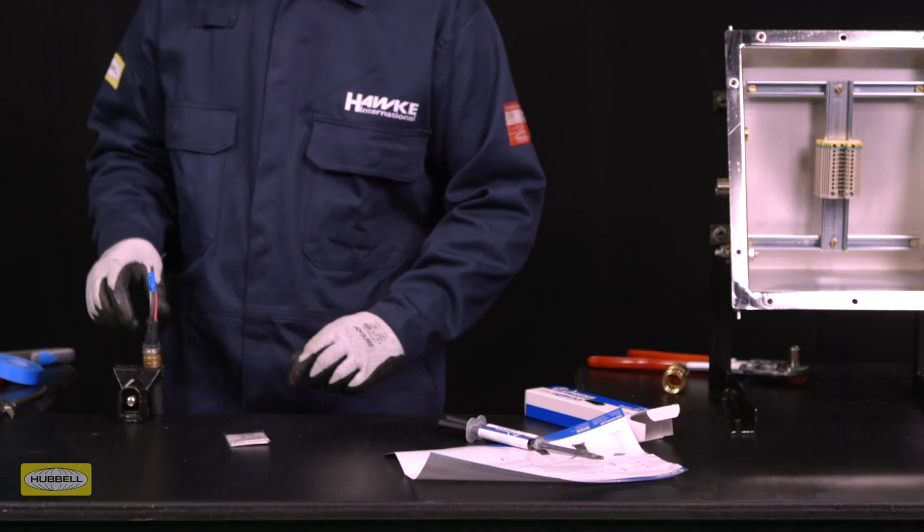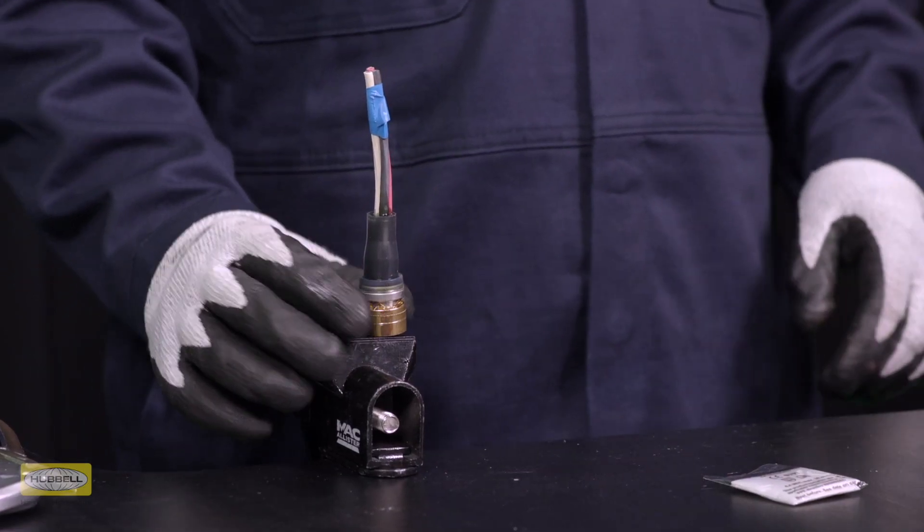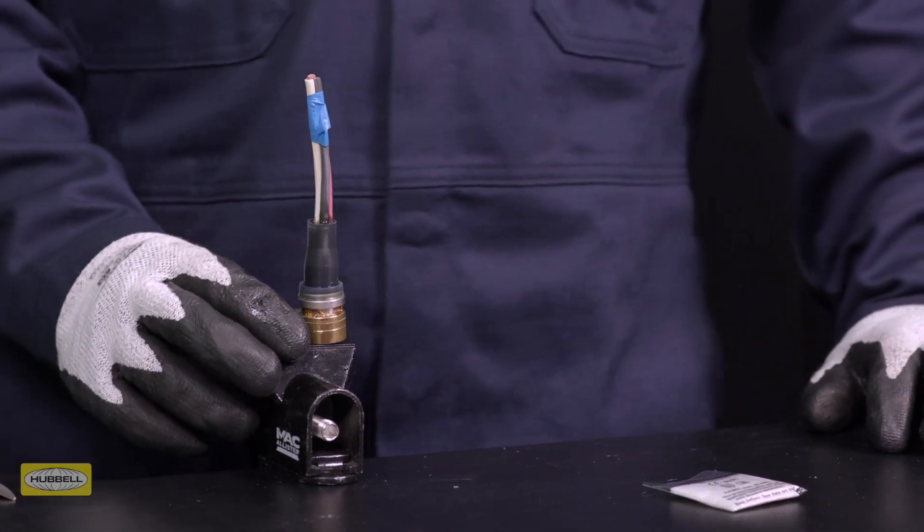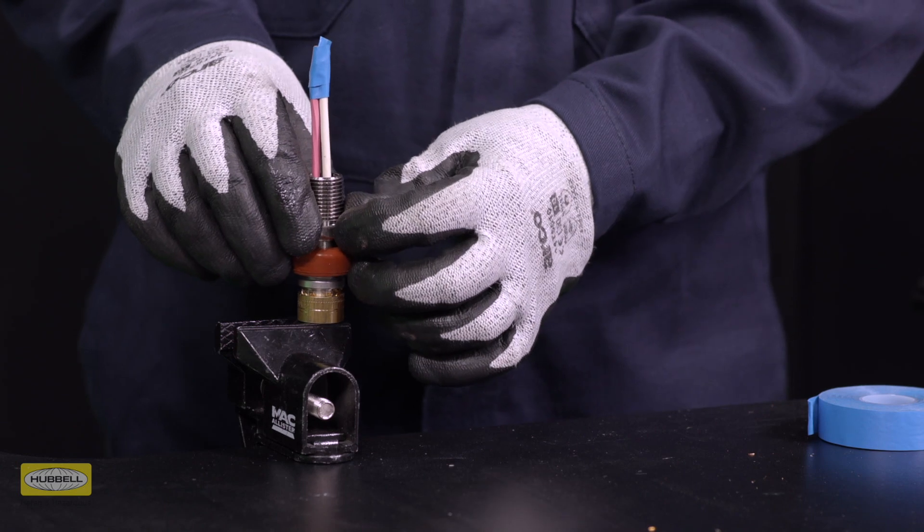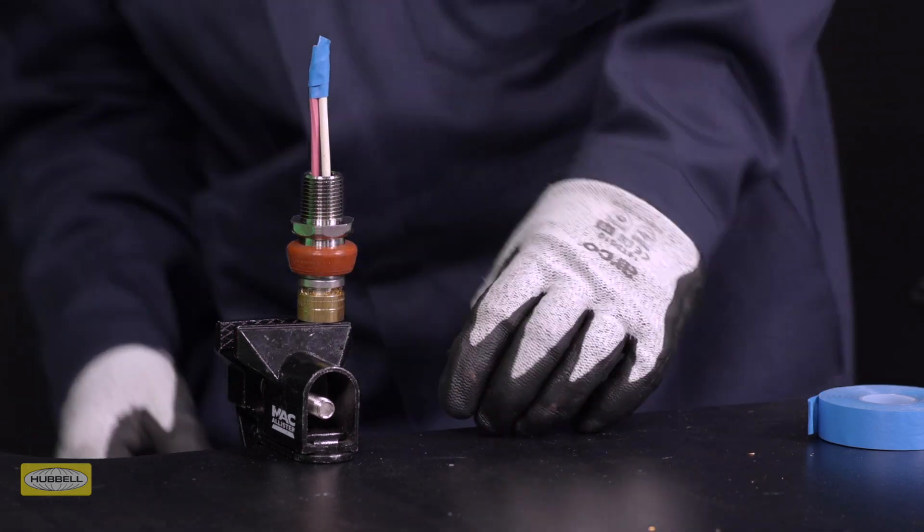Tape the cores so they stand centrally to the pot. If the fill level drops below the minimum level, top up the resin to the fill line. Place the entry over the silicon pot to ensure it is held in the correct position.